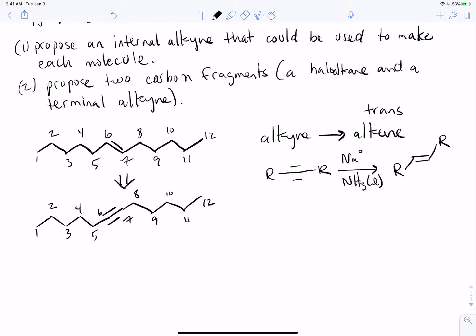From there, they're asking us to propose two carbon fragments that we could use to make this alkyne. This gets a little bit harder here. The key is to remember what we looked at previously, which is that we can form a carbon-carbon bond by taking a terminal alkyne and we can attach it - we can snap it together with an alkyl halide or haloalkane.